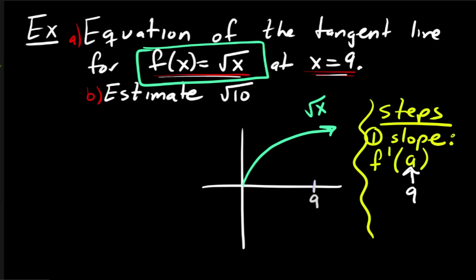So of course, at 9, the y value would be square root of 9, which is 3. So what I'm looking for is the equation of this line, the tangent line right here, let me draw that, so that's the equation of this line that I'm looking for.